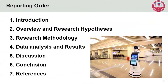My reporting order will consist of the following seven sections: first, introduction; second, overview and research hypotheses; third, research methodology; fourth, data analysis and results; fifth, discussion; sixth, conclusion; and finally, references.